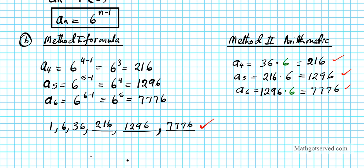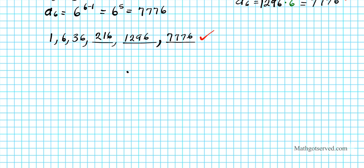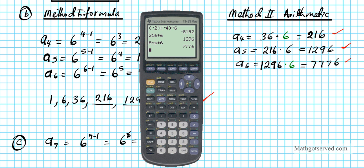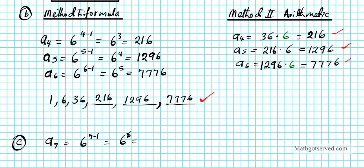Now let's move on to part c, which is to find the seventh term of the geometric sequence. A7 is simply six to the seven minus one, which is six to the sixth power. Working that out in the calculator, six to the sixth power gives forty-six thousand six hundred fifty-six. So a7 equals 46,656.